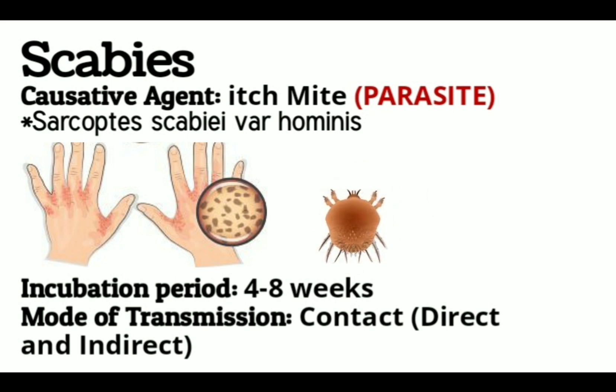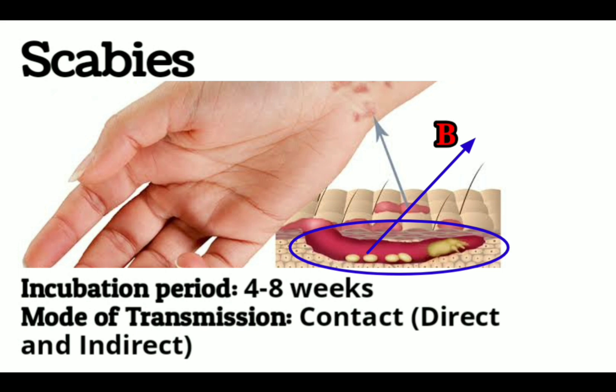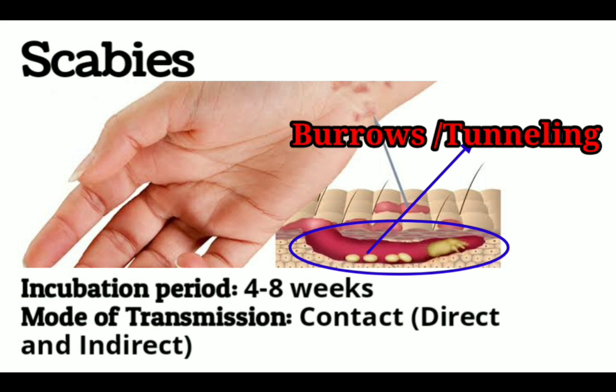The microscopic scabies mite burrows into the upper layer of the skin where it lives and lays its eggs. This means the parasite is found in the upper layer of the skin, which we call the stratum corneum (dermiscorium), where the parasitic agent resides.